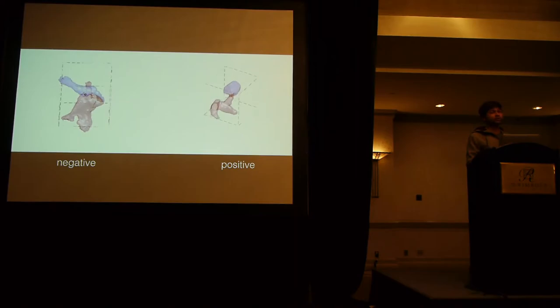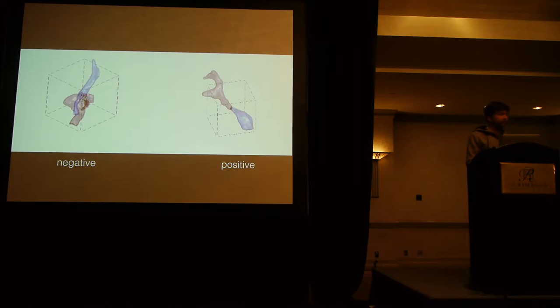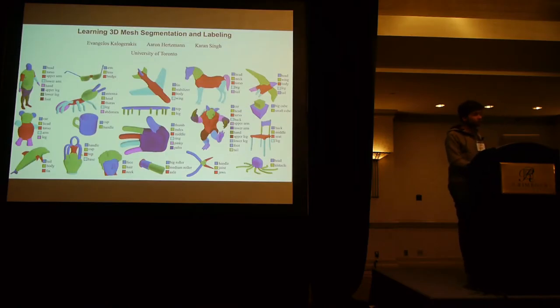But ultimately, for the purposes of this talk, what this boils down to is a sequence of binary decisions about whether two fragments are part of the same neuron or different neurons. On the left is a negative example, so those two fragments should not be merged together. On the right is a positive example, those two fragments should be merged together. But more generally, there's a lot of different applications that involve reasoning about 3D objects. For example, here's a paper from Toronto, Learning 3D Mesh Segmentation and Labeling, where they have existing models of 3D objects, and they want to basically segment those models into different semantically meaningful parts.